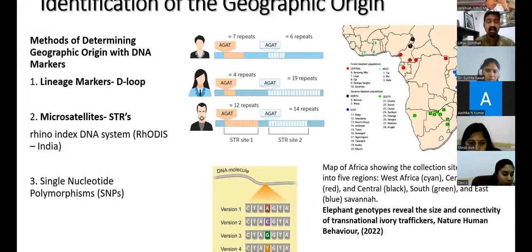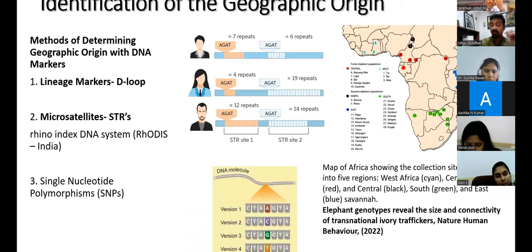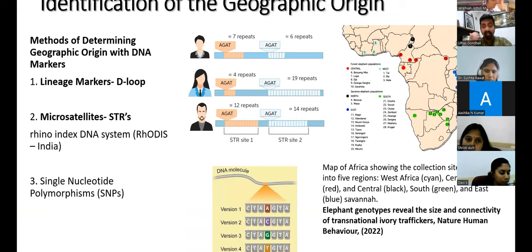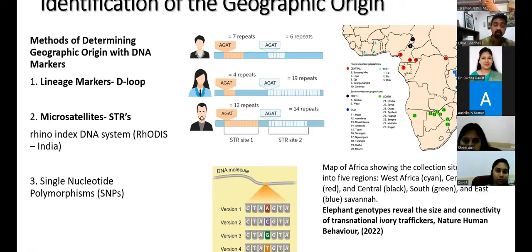The further question is identification of geographic origin. Geographic origin is important in cases like confiscated ivory. The major source of ivory is Africa, and there are different countries in Africa that are unfortunately hubs for ivory trafficking, each with different regulations. It is very important to know from which country in Africa the ivory was sourced. Once we identify the source country, it is easier to trace back to the origin of the crime and control the whole trafficking network.